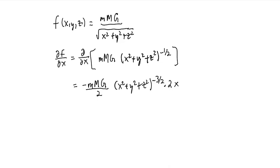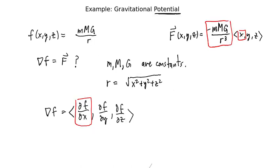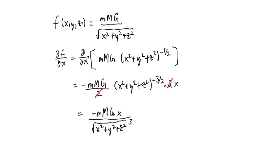All right, and then all that's left is to rearrange this. We notice that the twos, or simplified I should say, the twos cancel, x is here, and this term can be pushed to the denominator. And so at this point we have minus mMG times x over three halves power. I'm going to write as the square root of x squared plus y squared plus z squared quantity cubed. And then we remember, okay, that x squared plus y squared plus z squared square root, that's just r. So this can be written as minus mMG over r cubed times x.